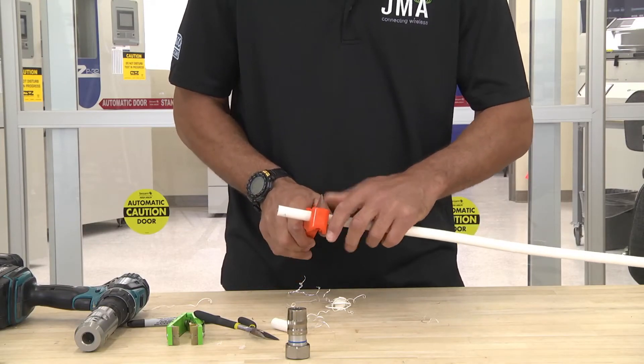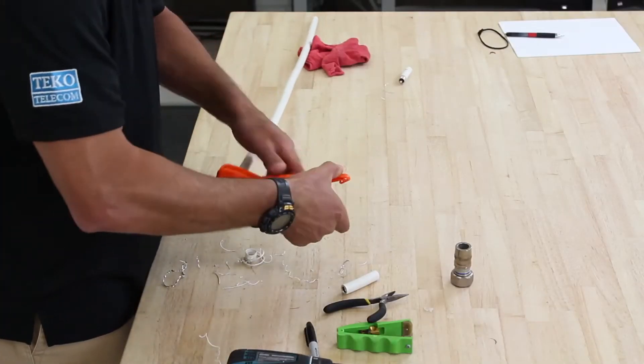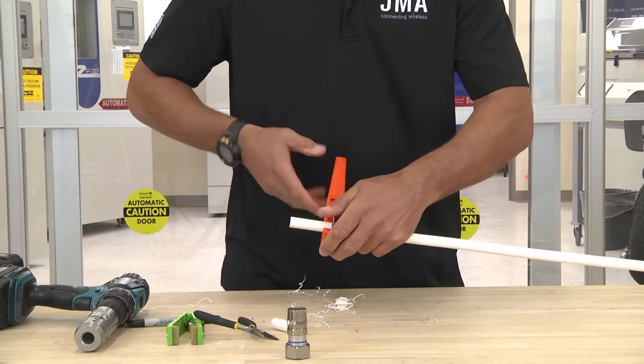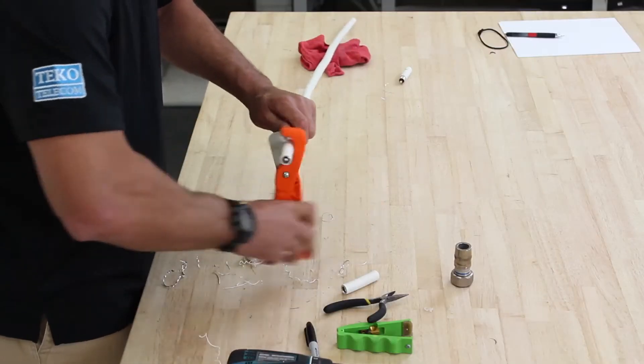Take your cutter and make sure you make a nice square cut on the cable. What I like to do is cut through the outer conductor and the outer jacketing and then score the center pin.